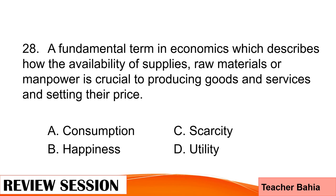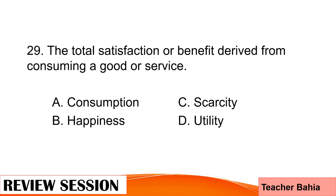Number 28. A fundamental term in economics which describes how the availability of supplies, raw materials, or manpower is crucial to producing goods and services and setting their price. Is it A. Consumption, B. Happiness, C. Scarcity, or D. Utility? The correct answer is letter D. Utility.